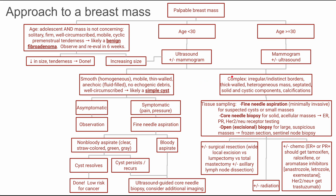Now let's consider the other pathway. If it's a complex breast mass, this means it has irregular or indistinct borders, thick-walled, could be heterogeneous, septated, have solid and cystic components, or have calcifications. In this case, you have three options for tissue sampling: fine needle aspiration, core needle biopsy, or open excisional biopsy.